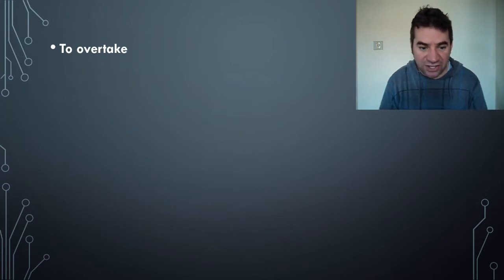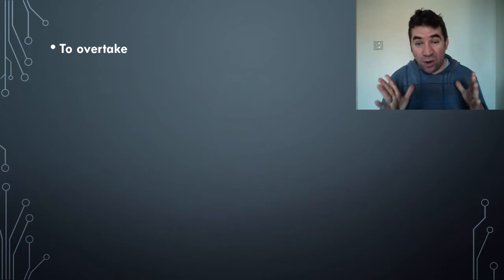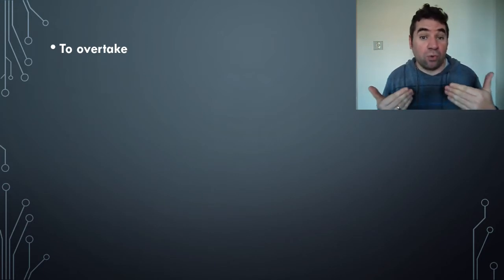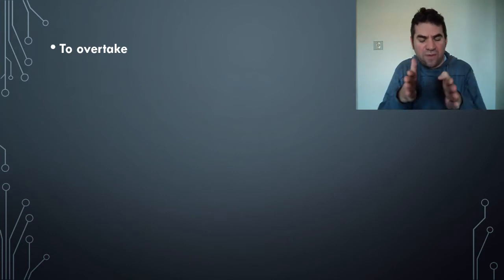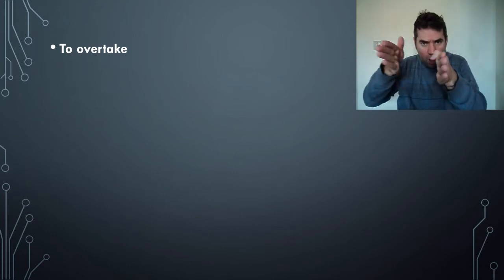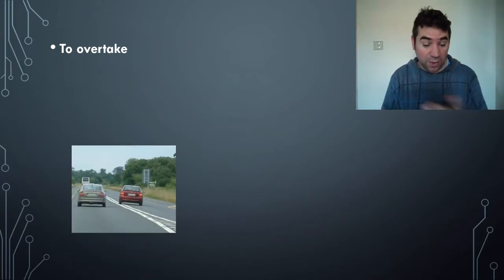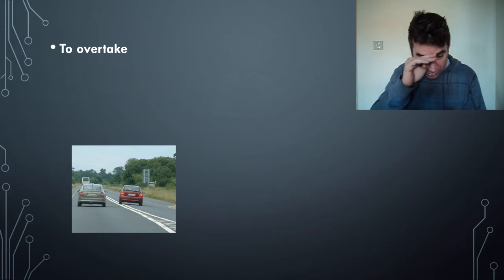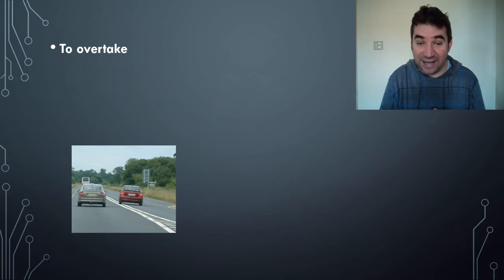First word: to overtake. To overtake is usually used when you're in a race, competing with someone else, or perhaps driving. If you're overtaking, you are going past someone. Here you can see — and it depends which country you are in — this is obviously England, because you've got the gold car and the red car is overtaking.